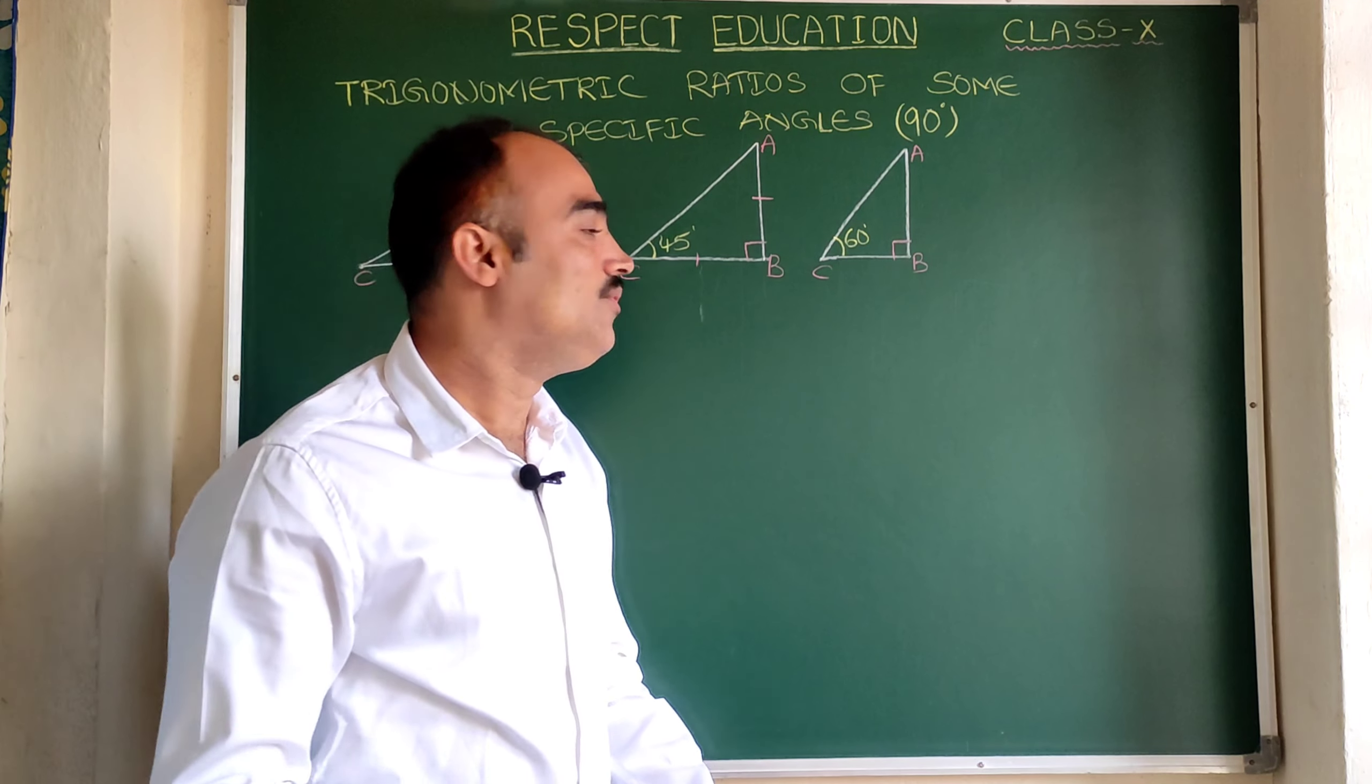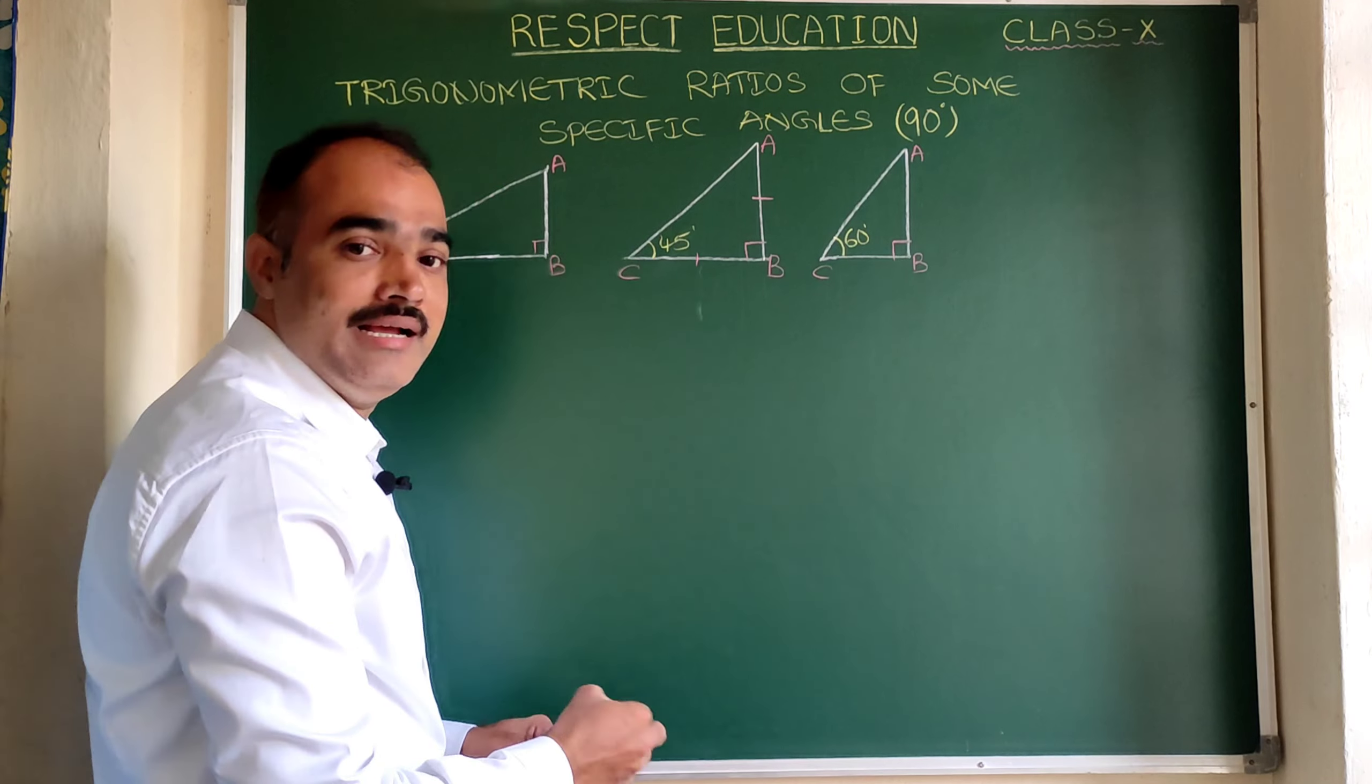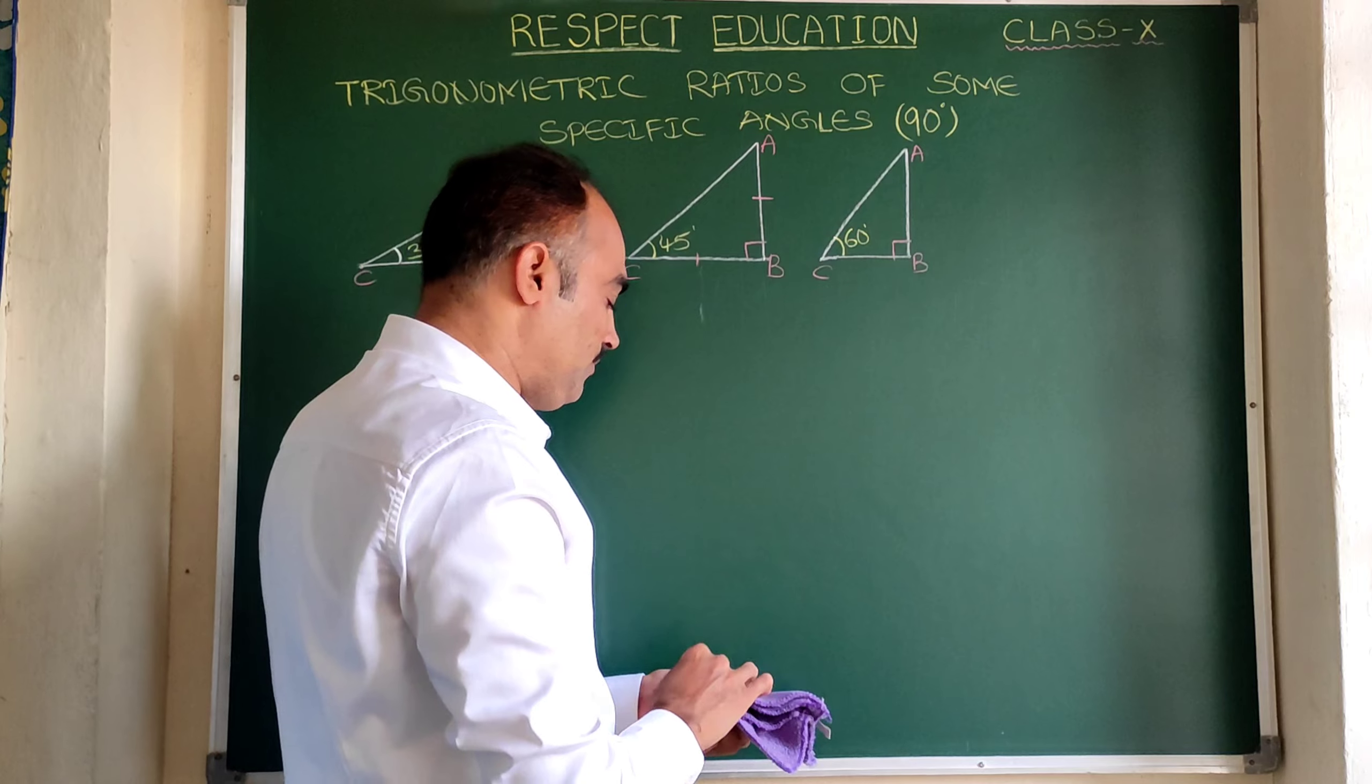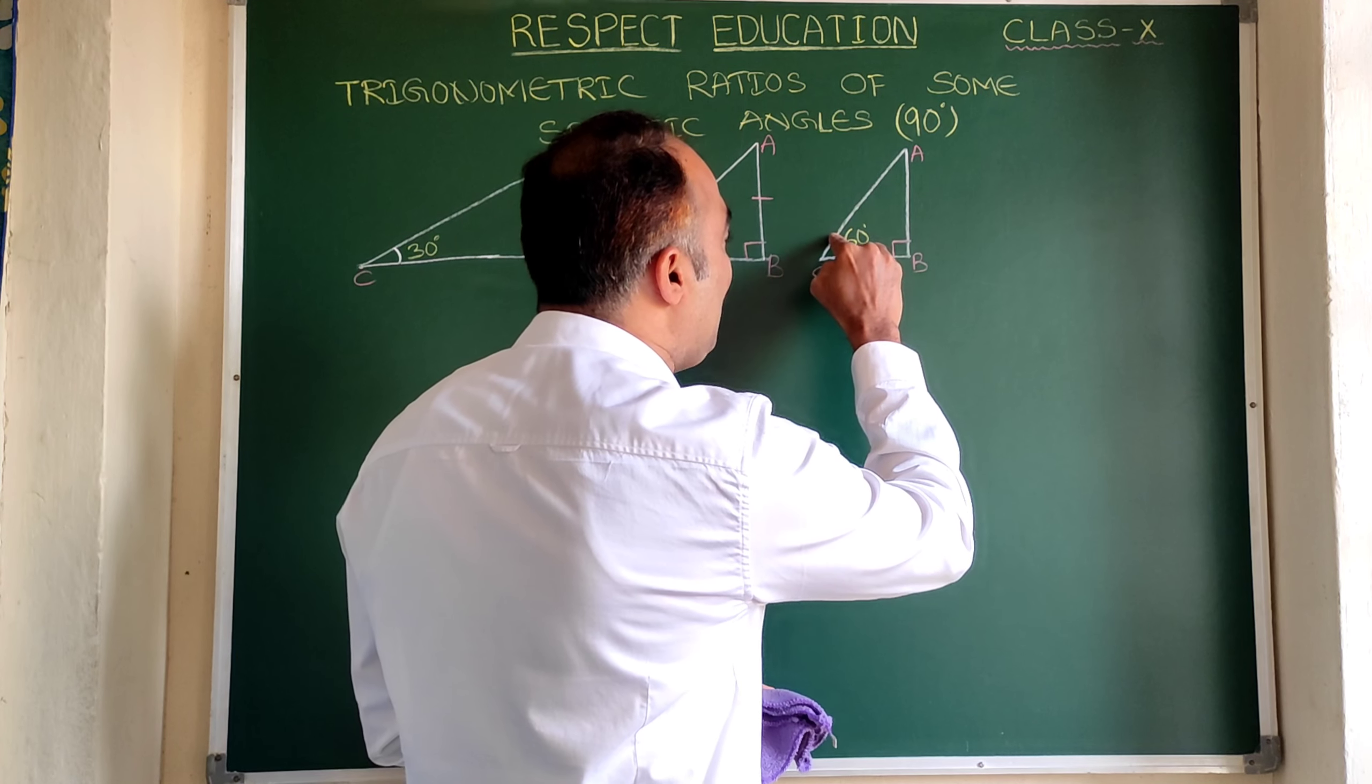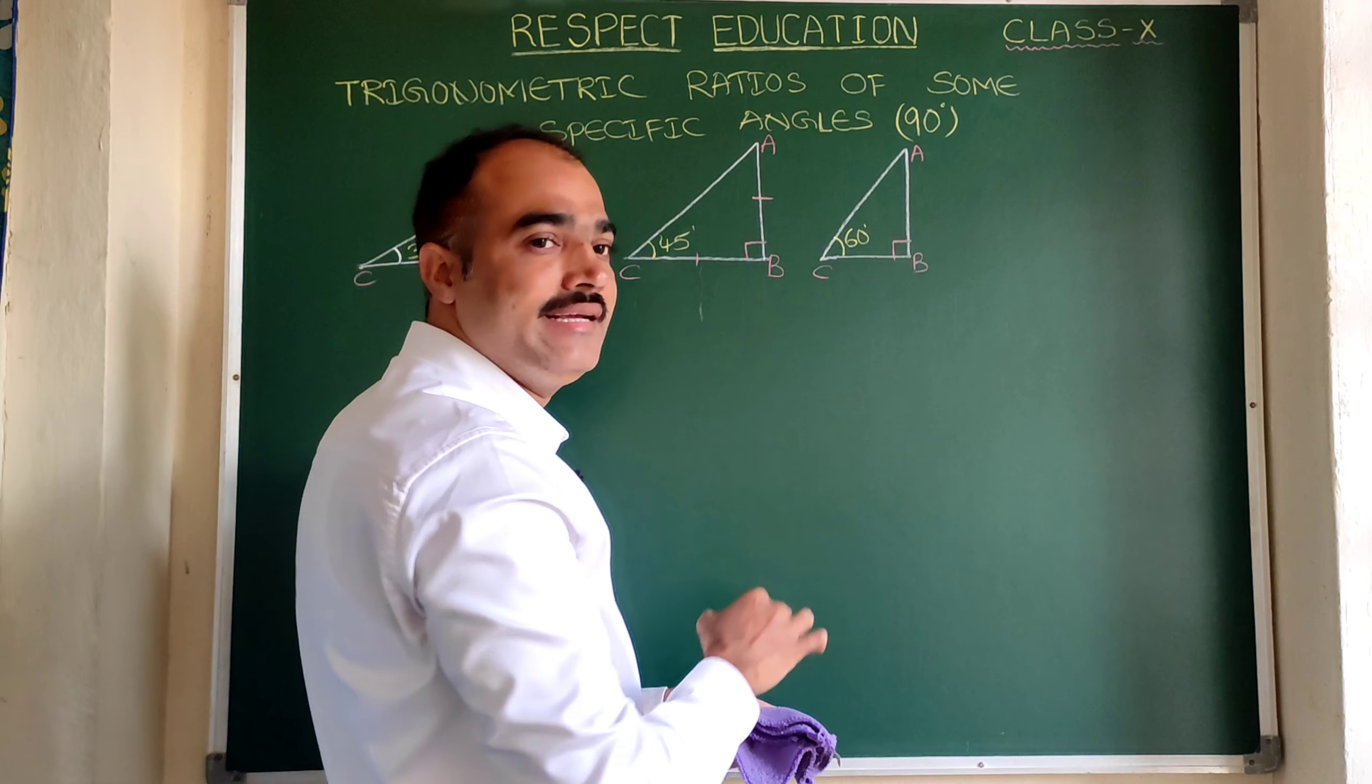That means what you need to understand: if we go on increasing the angle, the size of the base will be getting reduced. Then what if we happen to take 90 degrees, then what happens?